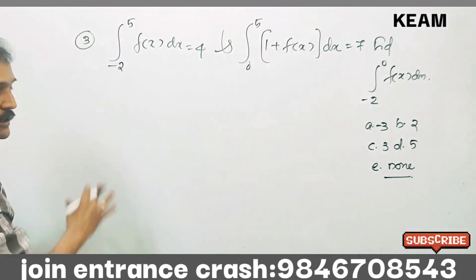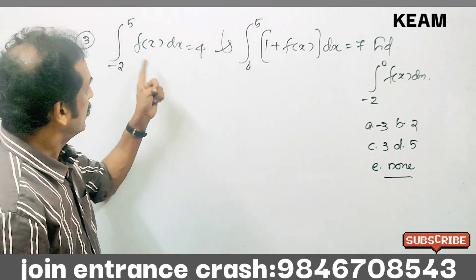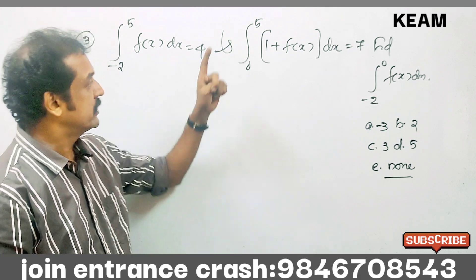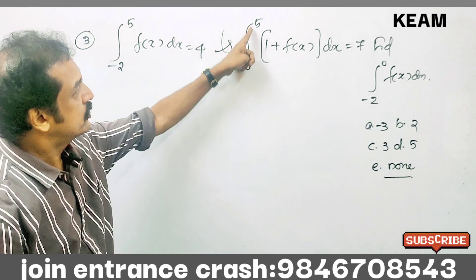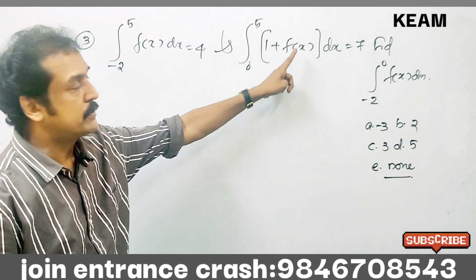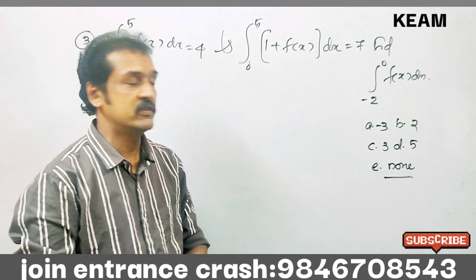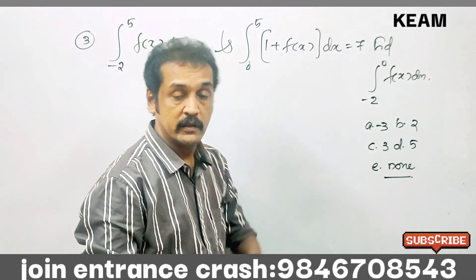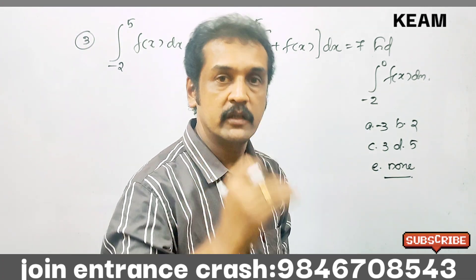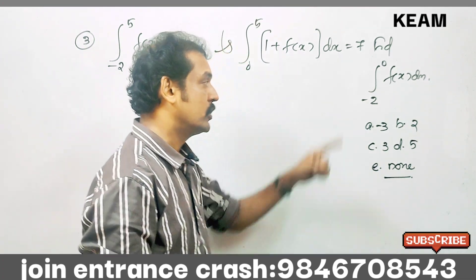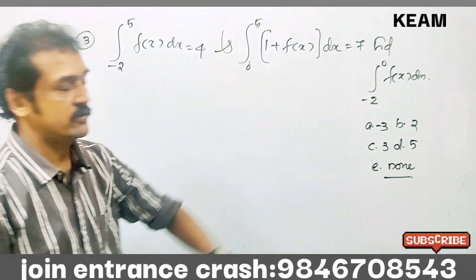Next problem: integral from minus 2 to 5 of f(x) dx is given to be 4. Integral from 0 to 5 of (1 plus f(x)) dx is given to be 7. Find the integral from minus 2 to 0 of f(x) dx.